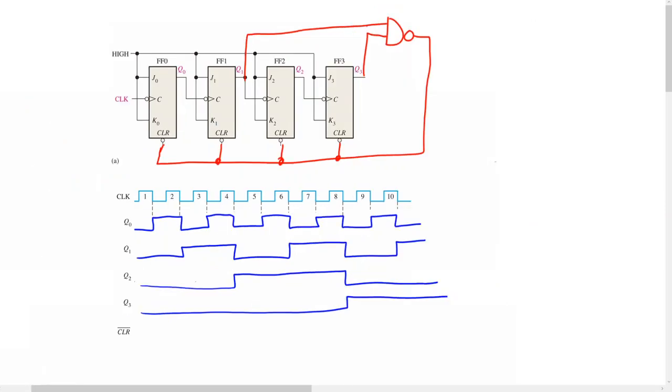How does the NAND gate reset the counter? We are looking for one specific situation where q3 and q1 are both ones. When they are both ones, we will have a zero presented on the clear inputs of each one of the flip-flops, and that specific situation only occurs in one specific place in the timing diagram.